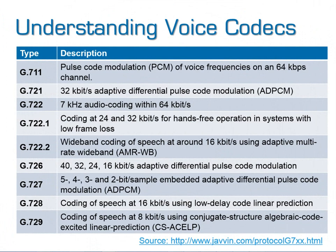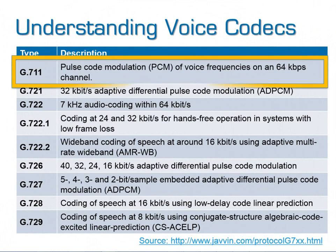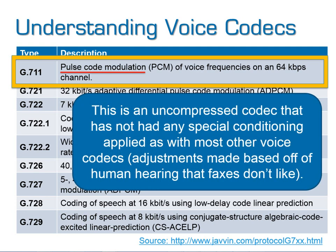In the world of voice codecs, there are many options, most designed and customized for the human voice. The one that fax uses is G711, called pulse-code modulation. Basically we're looking at 64 kilobits per second on each channel. This is preferred because it is an uncompressed codec that has not had any special conditioning applied, as with most other voice codecs.